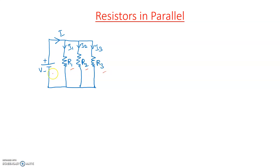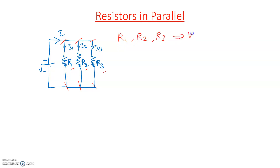Now consider three resistors R1, R2, R3 connected in parallel across the same voltage source. When resistors are connected in parallel, all resistors share the same voltage V across them — voltage across R1, R2, and R3 is all V volts. I is the total current supplied by the source.